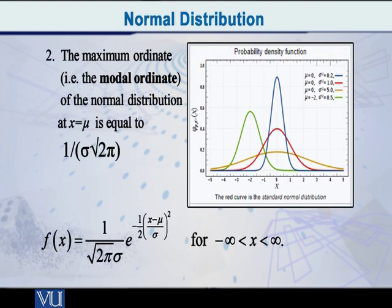One more property that you will understand quite quickly: the maximum ordinate, which can also be called the modal ordinate, is equal to 1/(σ√(2π)). Let me try to explain this. The thing is, as you saw, it is absolutely symmetric. So for an absolutely symmetric curve, where is the mean located? Obviously, it is that point on the x-axis about which we have the symmetry.